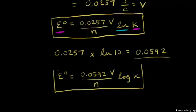So this is just another form of the same equation, relating the standard cell potential E zero to the equilibrium constant K.